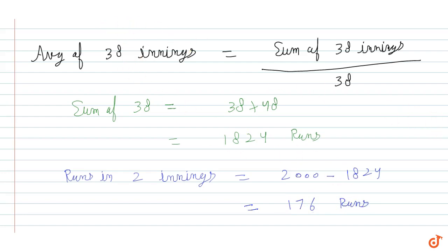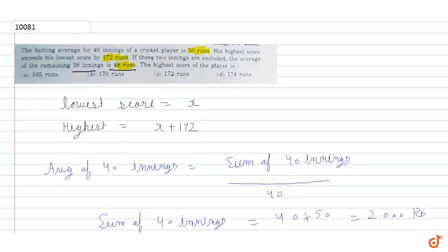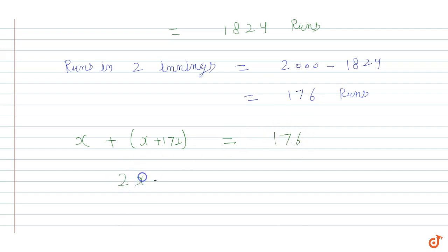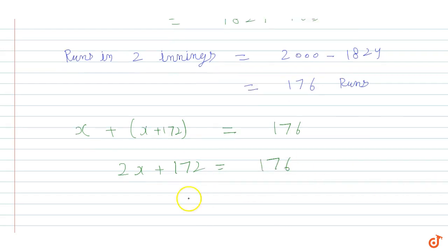Given that the sum of the two innings equals lowest plus highest, the lowest score is x and the highest score is x plus 172. So we can write: 2x plus 172 is equal to 176. Solving this, the value of x is equal to 2.